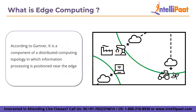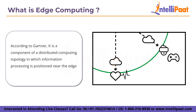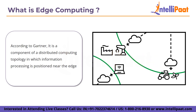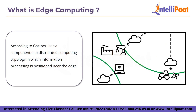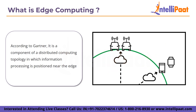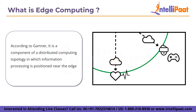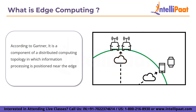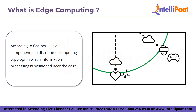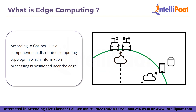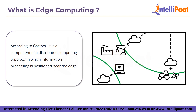Let's start with what is edge computing. According to Gartner, edge computing is a component of a distributed computing topology in which information processing is positioned near the edge where things and people produce or consume that information. Basically, edge computing at its most basic brings computation and data storage closer to the devices that collect information, rather than relying on a central site that may be thousands of miles distant.